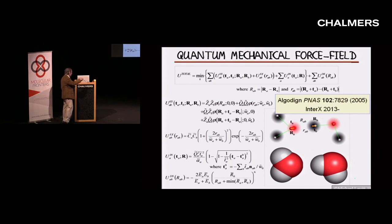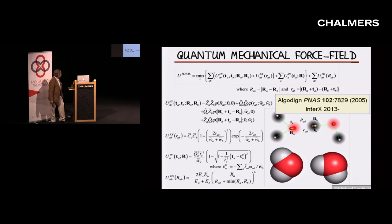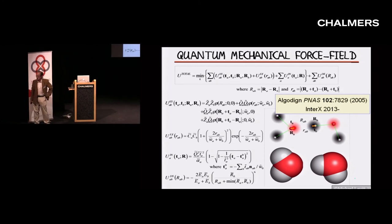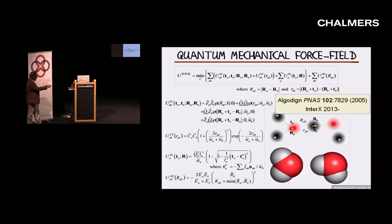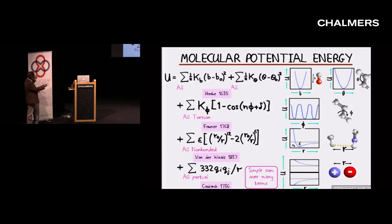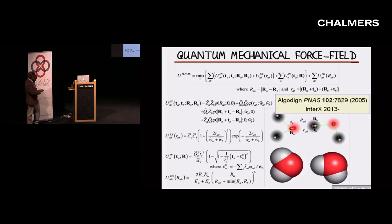I was on the scientific advisory board of this company called Algodyne. In 2005, they published a paper showing a force field which is a bit more complicated mathematically, but the computer program only takes about a factor of 10 longer. The basic idea goes back to work thought about in the 70s. You take two molecules — two water molecules — put them in a certain pose, and using the best quantum mechanics you can, calculate the energy of interaction. Then you repeat that for many different poses.